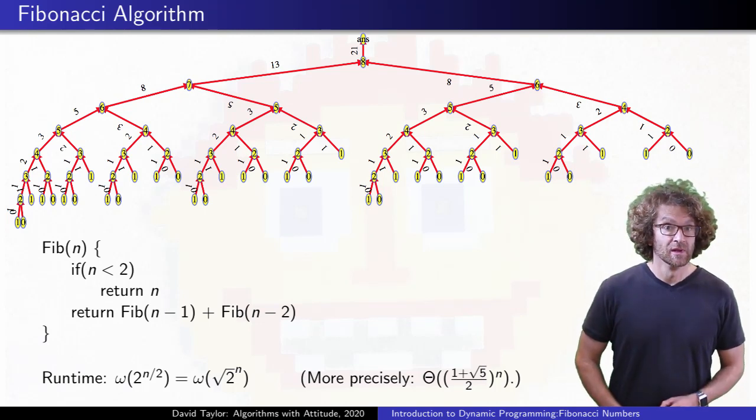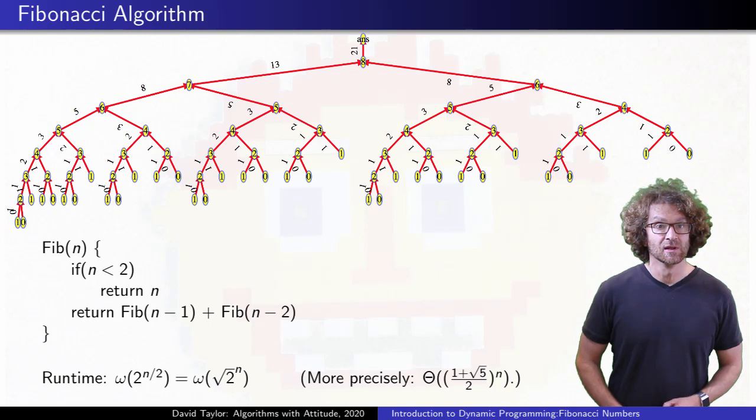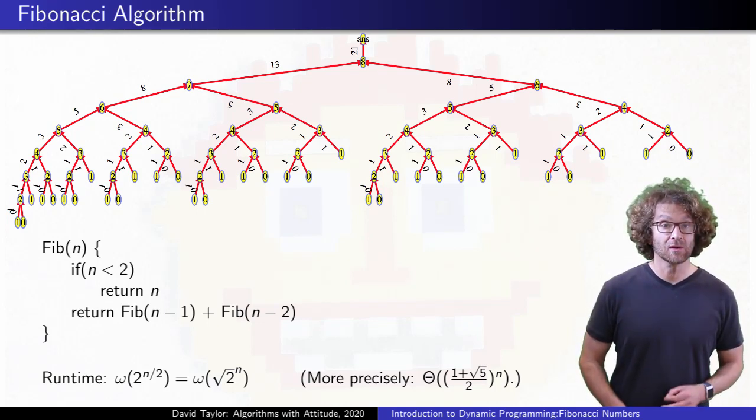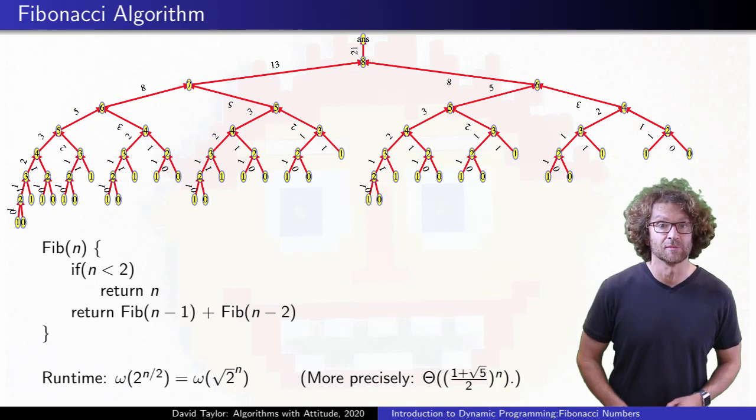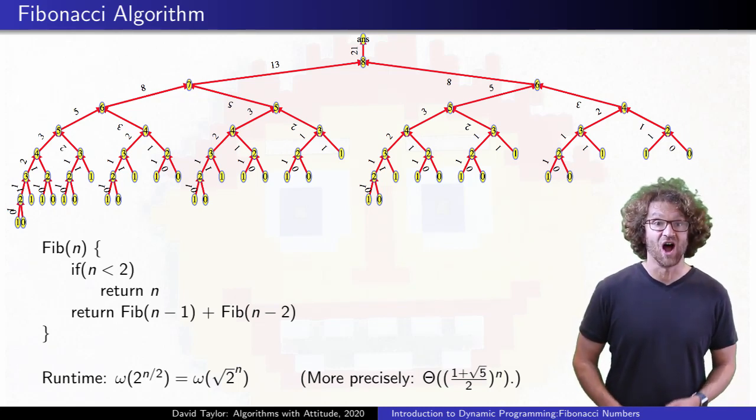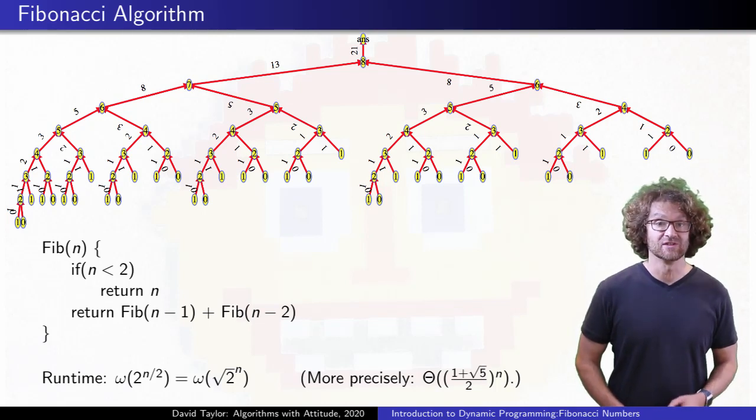But there's hope. You see those two subtrees rooted at 5 right in the middle of the tree? They're exactly the same, just repeating the same work. Not only that, but there's another 5-subtree all the way on the left. Every one of those subtrees computes the 5th Fibonacci number, and it's always 5. It's kind of dumb to repeat all of that work 3 times.